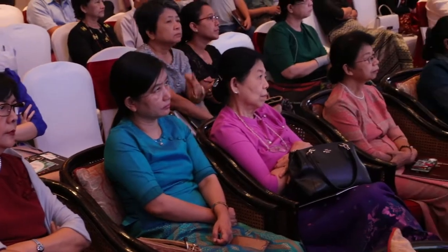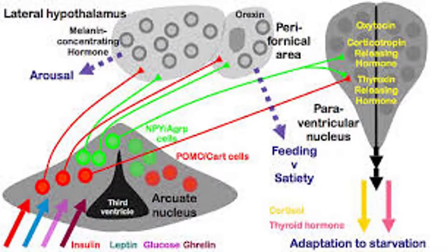In most tissues, glucose is completely oxidized, but in some it is only partially oxidized, leading to lactate, pyruvate, alanine, and glutamine. These intermediate metabolites are also sensed by various organs for energy homeostasis. This slide shows an example in the lateral hypothalamus, where the sensing of glucose and lipid homeostasis takes place.